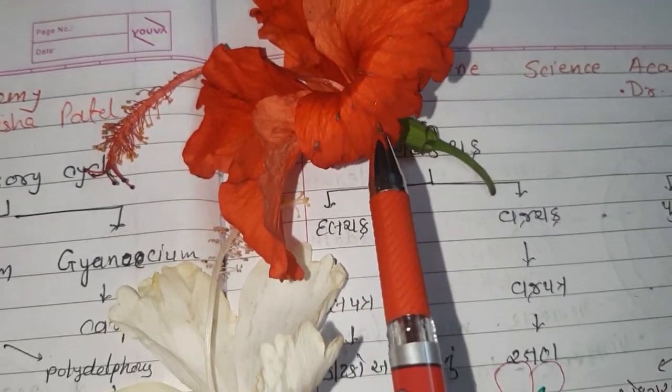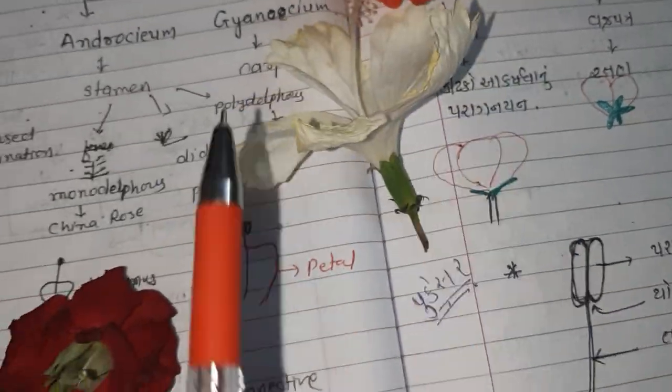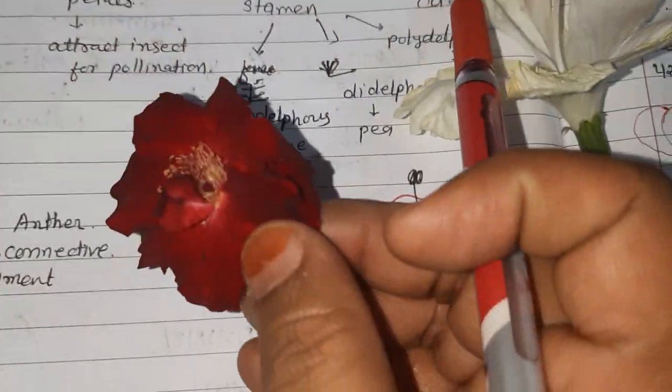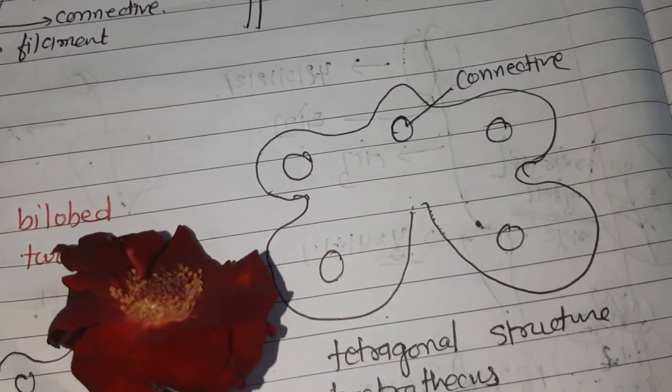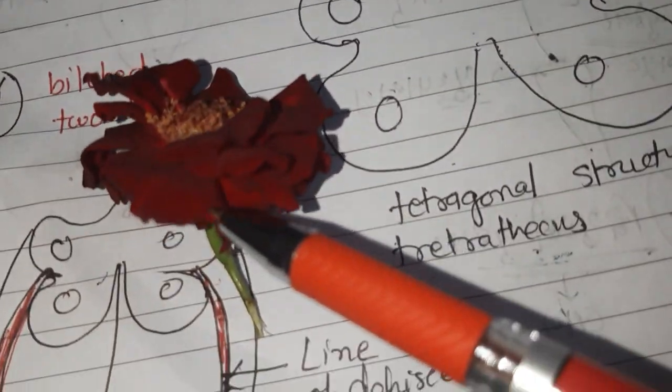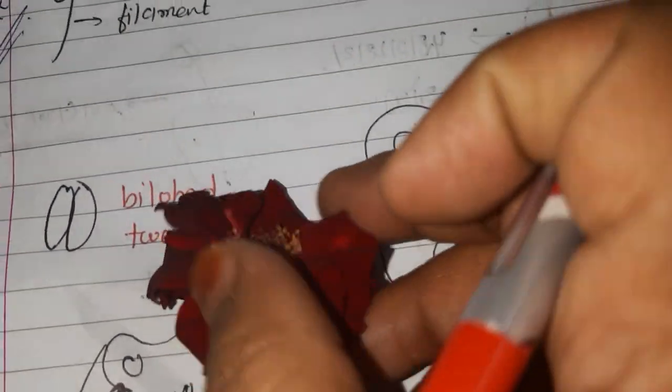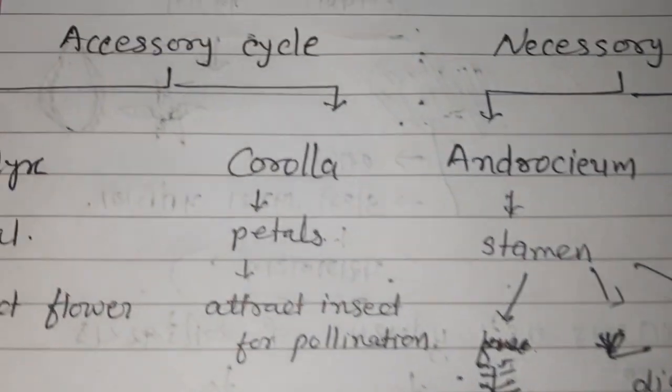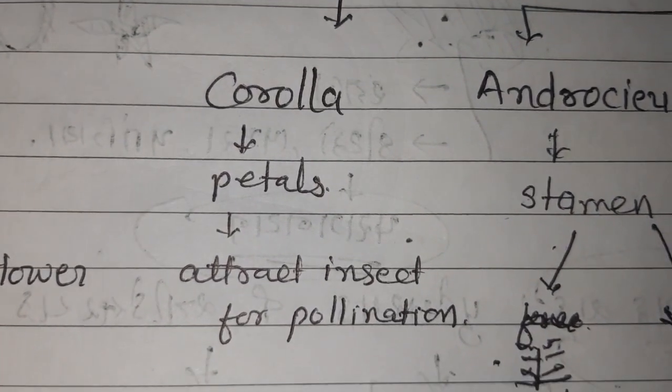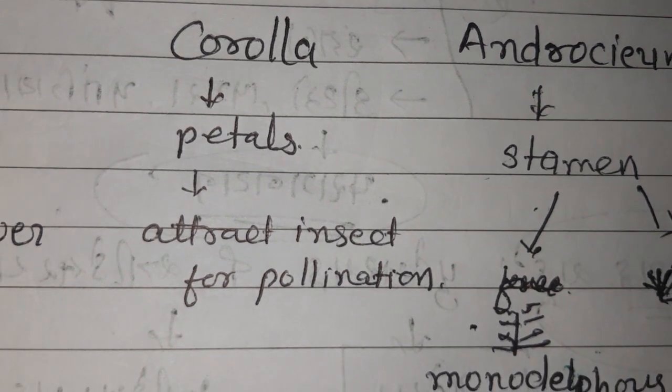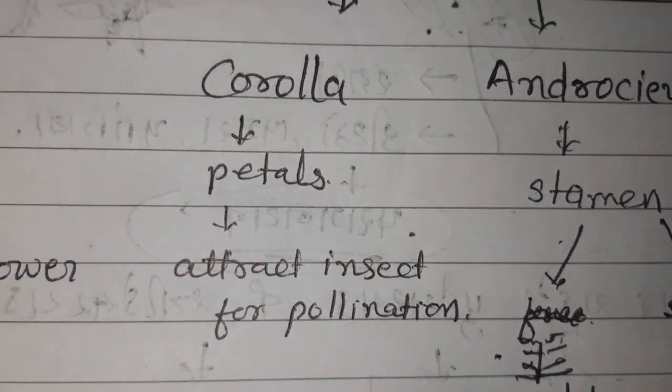Second is corolla. Corolla's basic unit is petal. You can see this is a hibiscus flower, this is petal. This is again hibiscus, this is rose, and these colorful parts are petals. The function of petal is to attract insects, and by this way they carry out pollination.